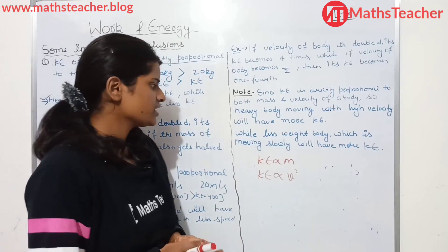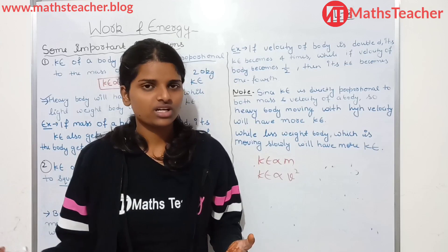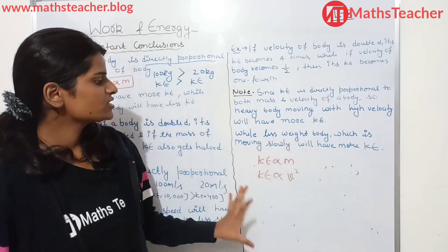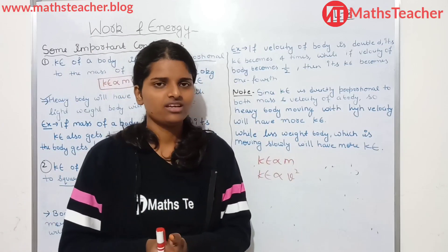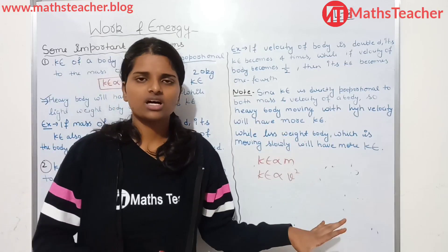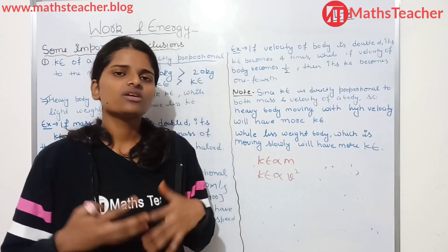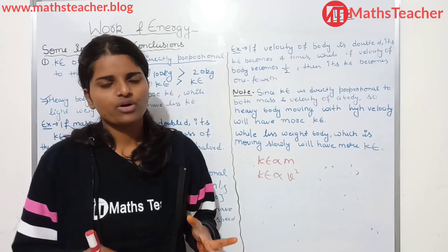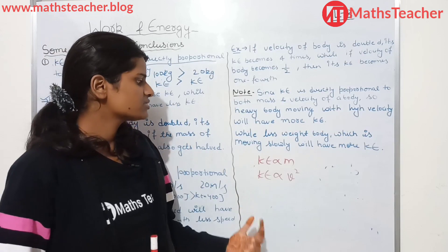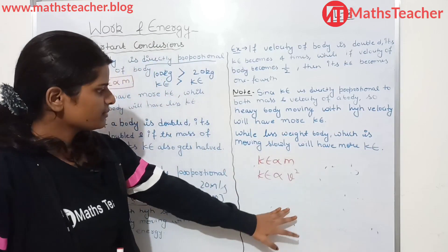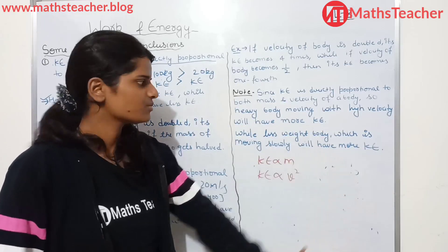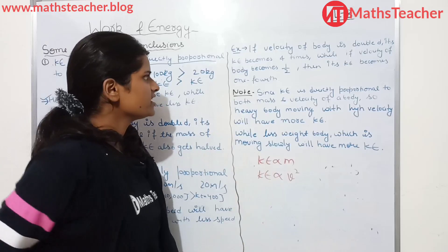Now assume a body with very high mass moving at very high velocity — its overall kinetic energy will be very high. Whereas a body with low mass moving at very low velocity will have very low kinetic energy. Relations are important and questions are asked from them. The mistake you will make is in V square — remember not to make that mistake.